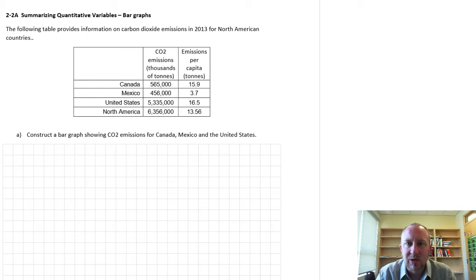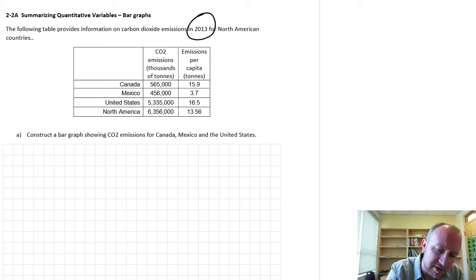When we discussed quantitative variables in the past, we had described either interval values or ratio values and cross-sectional data and time series data. So what we have specifically here, this is cross-sectional data. Here it says specifically just for the year 2013, and it's ratio data.